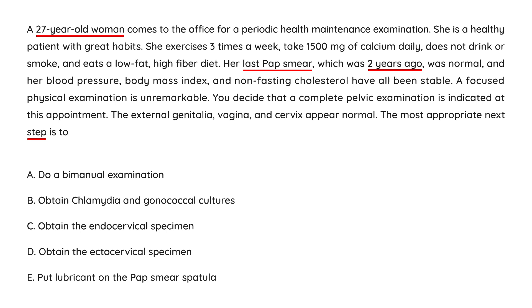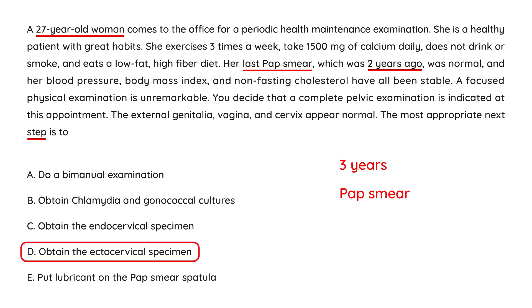By current guidelines, she would only require a pap smear every three years, though this question was written a few years ago when annual smears were common. The key point being tested here is: when you do a pap smear, do you sample the endocervix first or the ectocervix? The answer is you sample the outside first — the ectocervix. If you do a chlamydia and gonorrhea culture, that's fine, but it would be done after the pap smear.